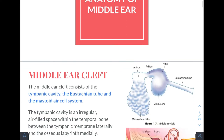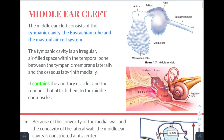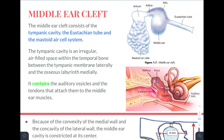Starting with what is the middle ear cleft: it consists of the tympanic cavity, also known as the middle ear cavity, the eustachian tube, and the mastoid air cell system. The picture shown here represents the entire middle ear cleft — this is the middle ear cavity or tympanic cavity, this is the eustachian tube, and this here is the mastoid air cell system.